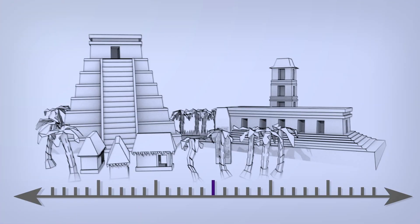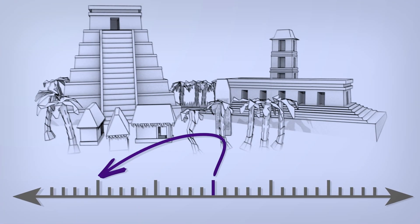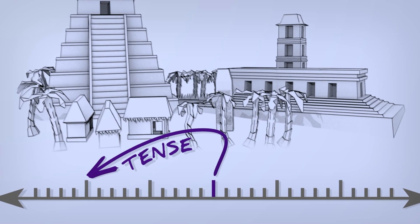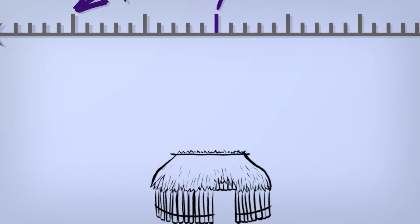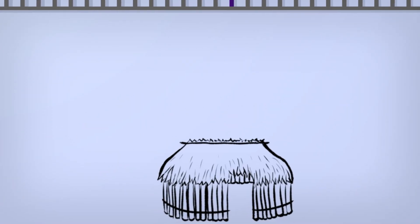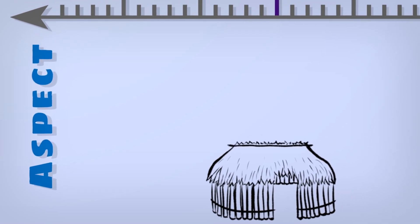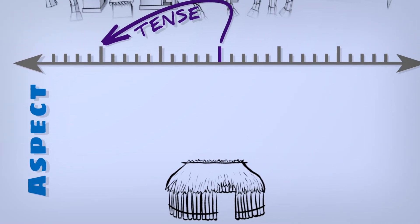See, tense is a way for you to relate the time of the topic you're talking about to the time when you're speaking. But watch what happens when Maya drops tense and thinks about another property, aspect. This is about flow, not the when but the how of time.